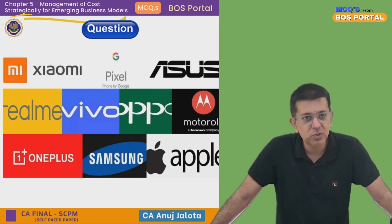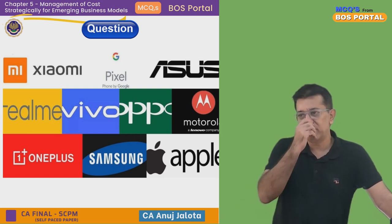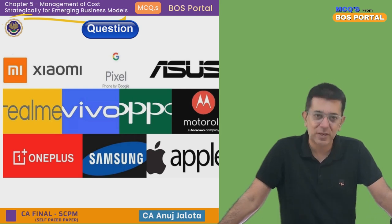Today, how many companies are operating phones in India? You have Asus, Google Pixel, Realme, Vivo, Oppo, Motorola, OnePlus, Samsung, Apple, Nokia, Xiaomi — so many companies. One company will launch a phone at 10,000 rupees, and within five days another company launches a slightly better phone for 9,000 rupees. Competition is so fierce every company tries to stand out either by better products or by reducing prices.